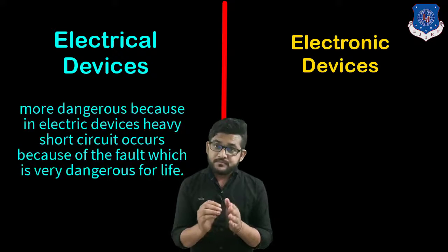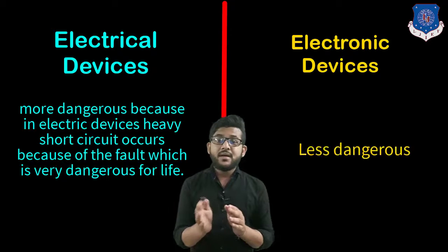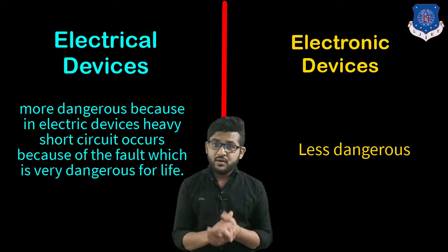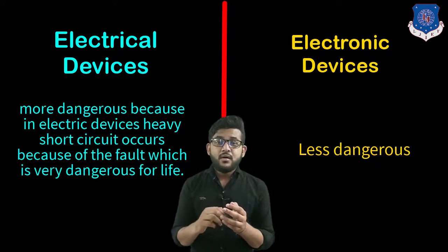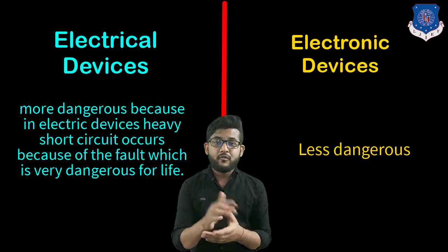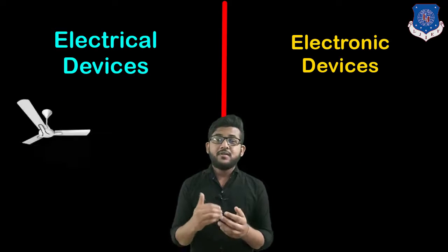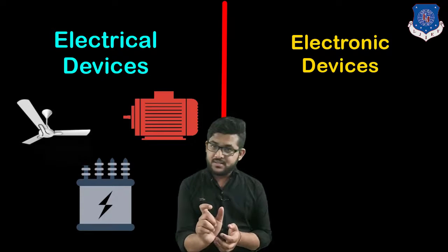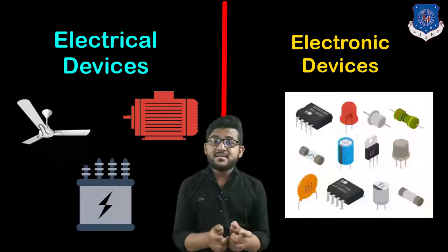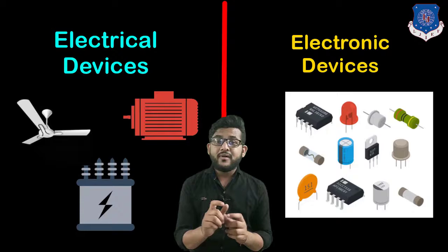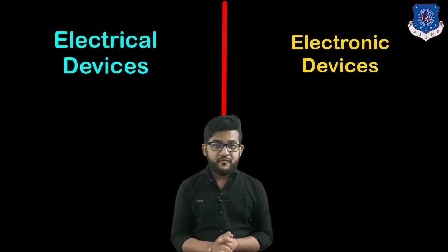Electrical devices are more dangerous compared to electronic devices because they operate at high voltage and heavy short circuits can occur due to faults, which is dangerous for life. Examples of electrical devices are fans, transformers, motors, and generators, whereas examples of electronic devices are transistors, thyristors, microcontrollers, and sensors.